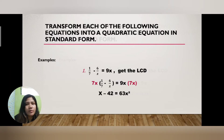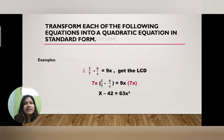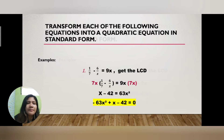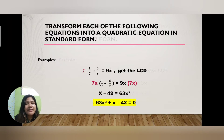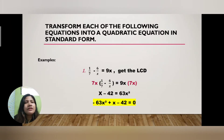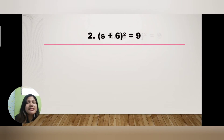Next, we arrange it in standard form: ax² + bx + c = 0. We transpose positive 63x² to the left side, so it becomes negative 63x². Copy x (it stays on the left), and minus 42 stays. So the final answer for example one is −63x² + x − 42 = 0.